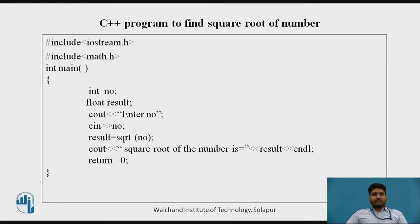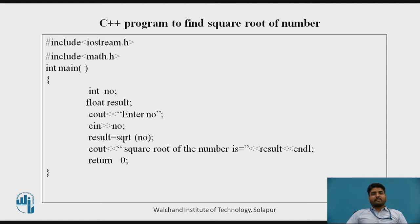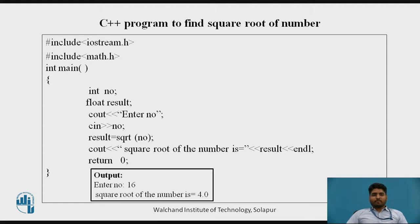The result is calculated using the SQRT function applied to number. The answer stored in result is then displayed on the screen using Cout — 'square root of a number is' followed by the insertion operator and result. End L is a manipulator used to move the cursor to the next line. The output will be 'enter a number' — if the user enters 16, the square root will be 4.0, displayed as 4.0 because result is of float type.